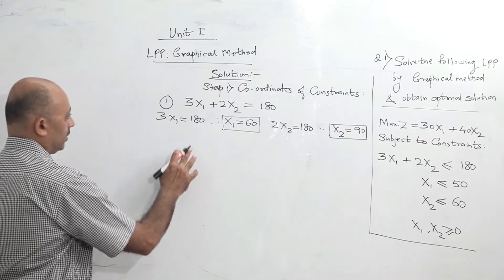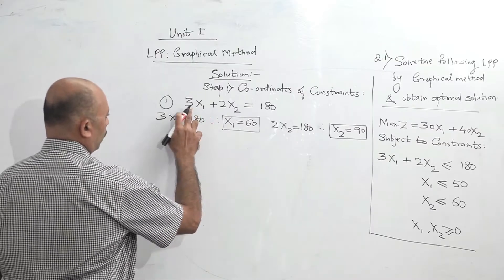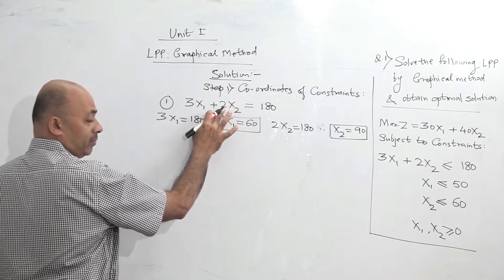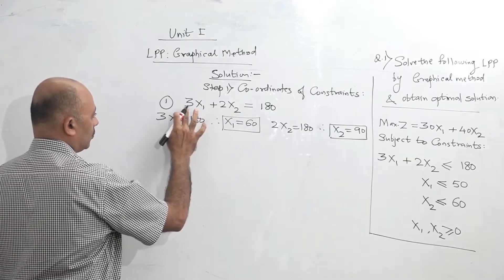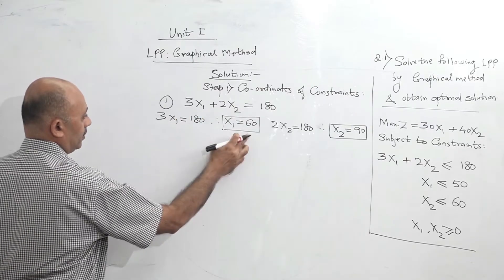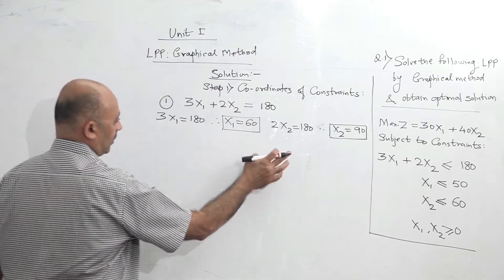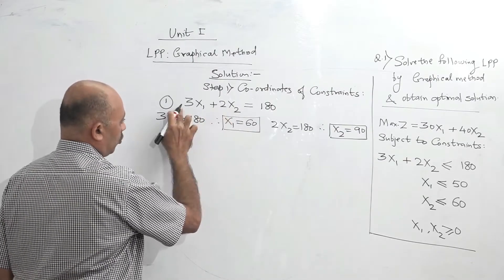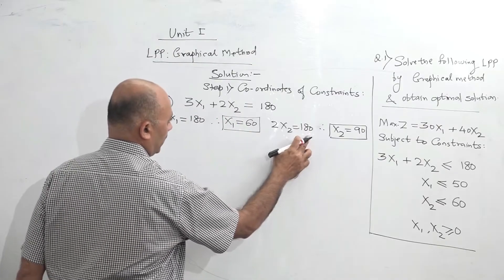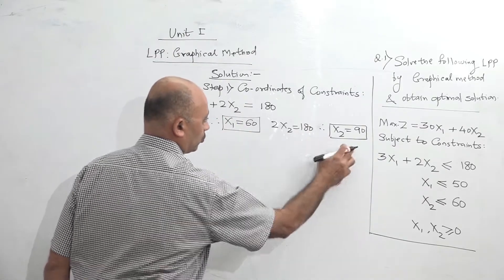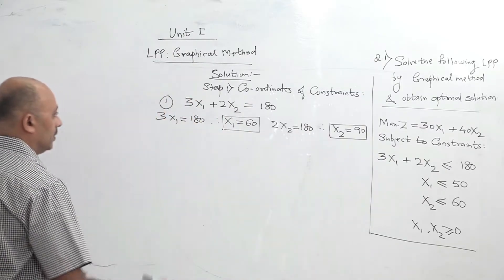To repeat: when you want to find x1, ignore x2, assume that it is 0. So 3x1 is 180, 180 by 3 is 60. Same way, you want to find x2, assume x1 is 0, so 2x2 is 180, 180 by 2 is 90, so x2 is 90.